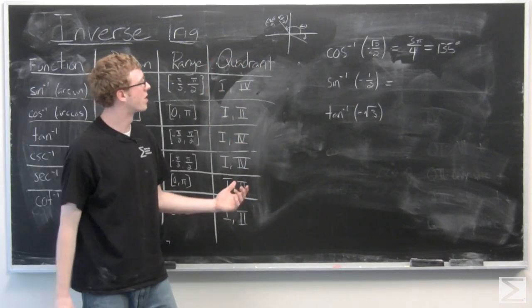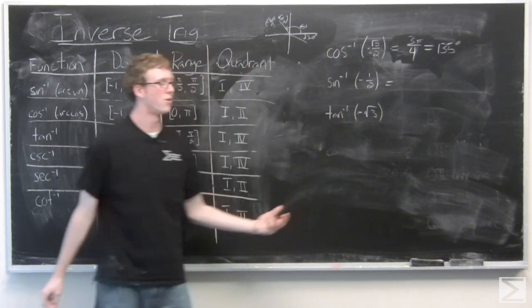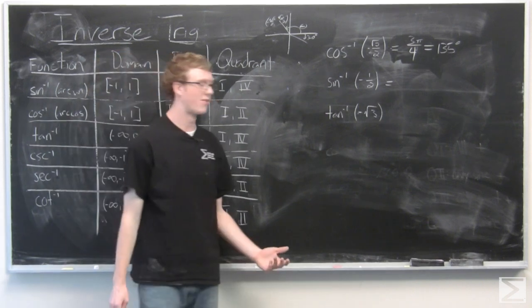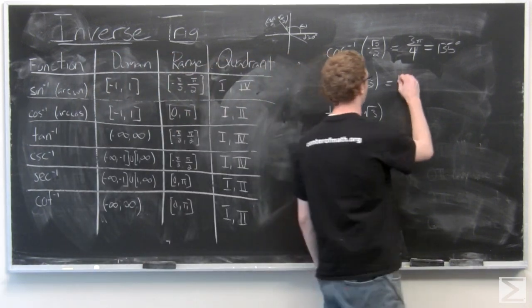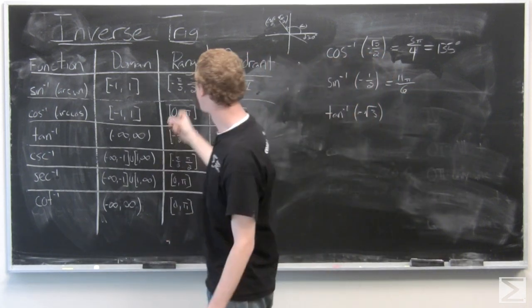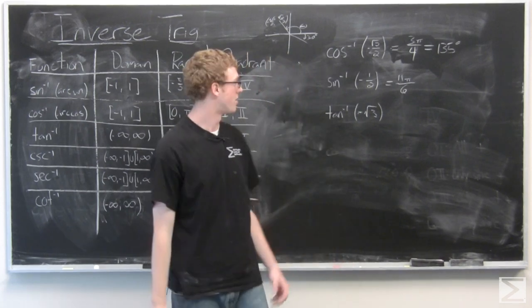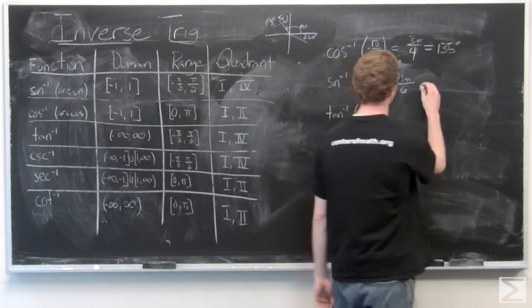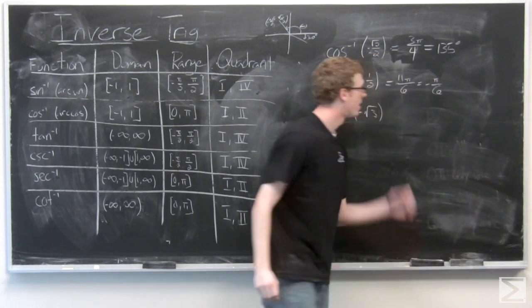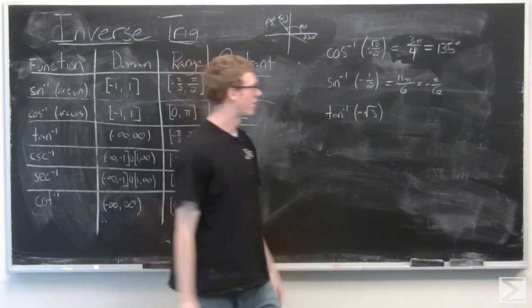So we would be looking for this angle to be 30 degrees here. And we can say either negative 30 or 330 degrees, which is 11π over 6 radians. But again, because our range is negative π over 2 to π over 2, we need to go ahead and subtract 2π from that. And that's going to leave us with negative π over 6, which is negative 30 degrees.